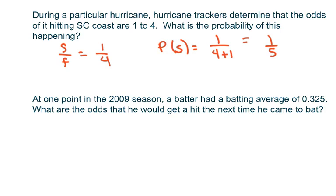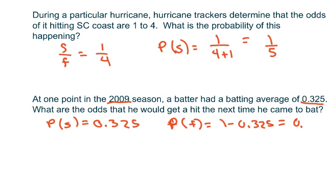Okay. Another one. At one point in the 2009 season, a batter had a batting average of 0.325. What are the odds that he would get a hit the next time he came to bat? So basically, we're going to do the probability of success is 0.325. And the probability of failure, I always do that, equals 1 minus 0.325, which equals 0.675.